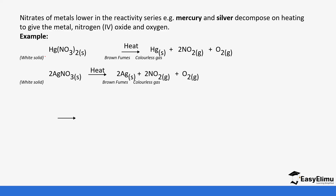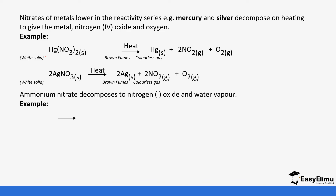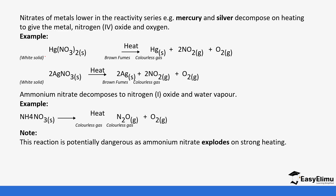The fourth category is ammonium nitrate, which is an exception. When ammonium nitrate decomposes, it forms nitrogen(I) oxide (N₂O) and water vapor. This reaction was also discussed when preparing nitrogen(I) oxide. Note that this reaction is very explosive, so you must not heat all the ammonium nitrate completely in the tube, as this could cause an explosion.